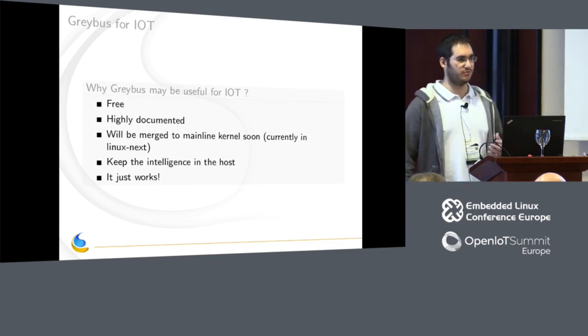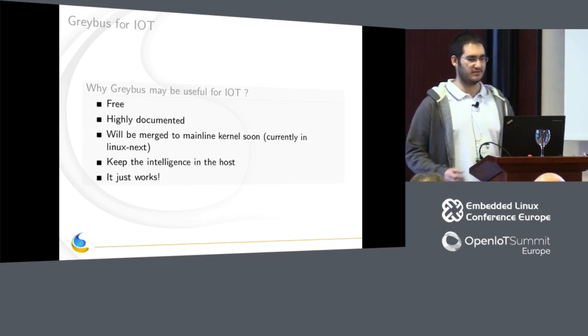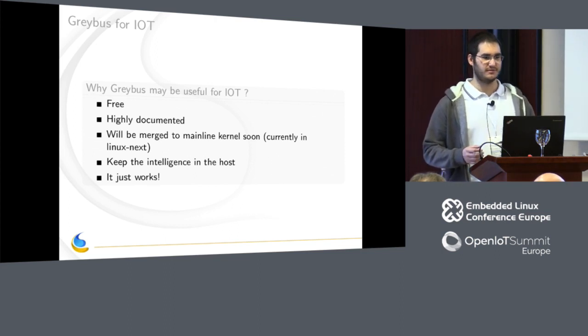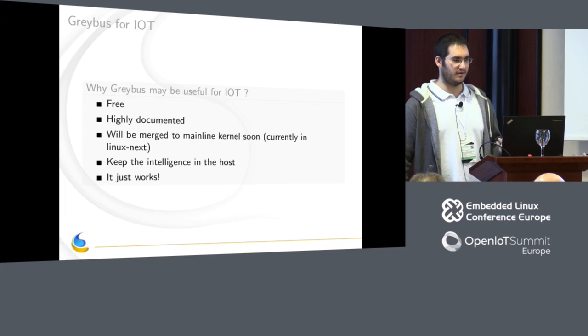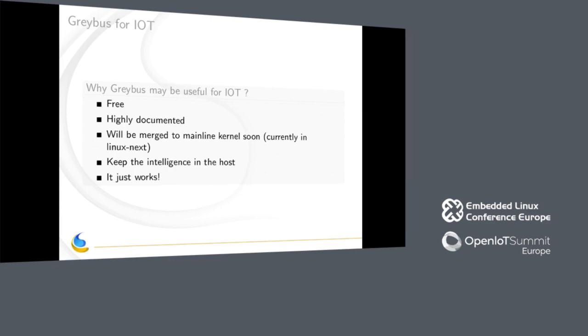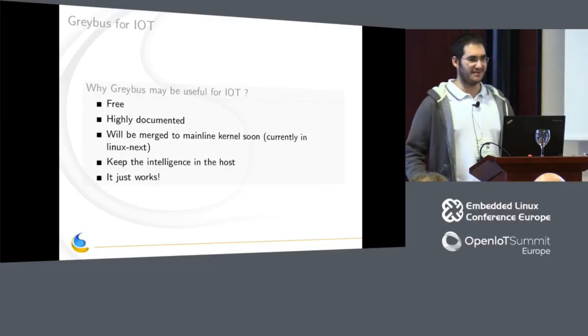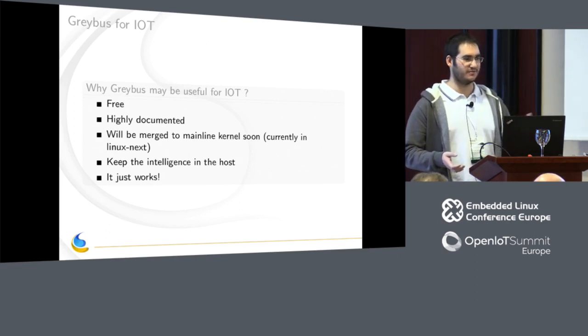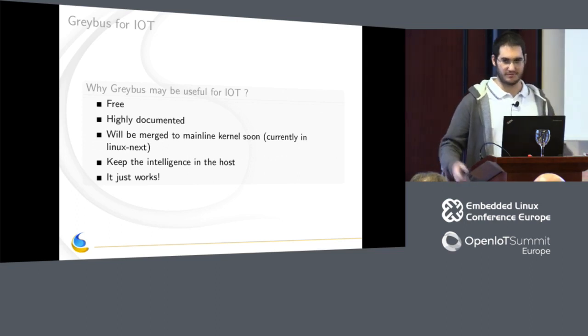The main interest of using Greybus for IoT is to keep the intelligence in the host. Microcontrollers used in IoT have memory and power constraints, so the goal is to use Linux as a gateway to control all the devices on your IoT device. You can use the SPI protocol to access your sensor and the sensor driver will remain on Linux. Most sensors already have drivers in Linux so you don't have to write anything if they're already supported. When everything is correctly set up, it just works.